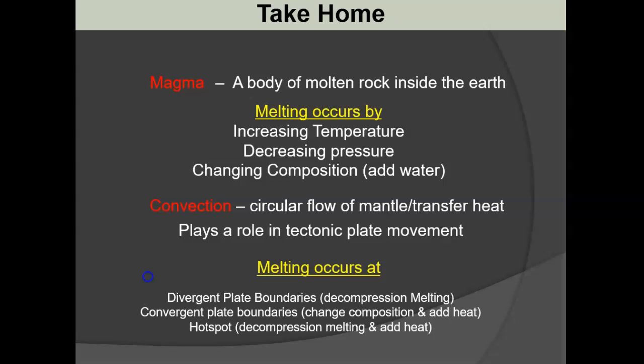At transform boundaries there's no subduction and no pulling apart of the crust, so there's no decompression melting either. That's why transform boundaries have no volcanic activity - there's no mechanism to form magma at depth. Magma is not everywhere inside the earth; it's at specific locations. Plate tectonic theory explains why we get volcanic activity at divergent boundaries, subduction zones, and hot spots - and not just everywhere. The next lecture will get into igneous rocks themselves.